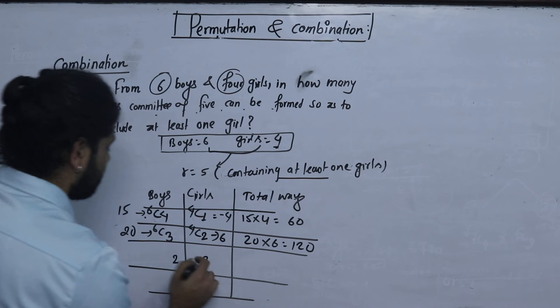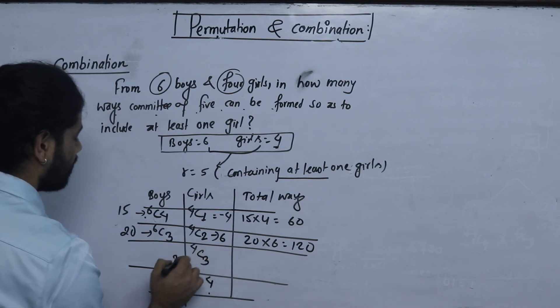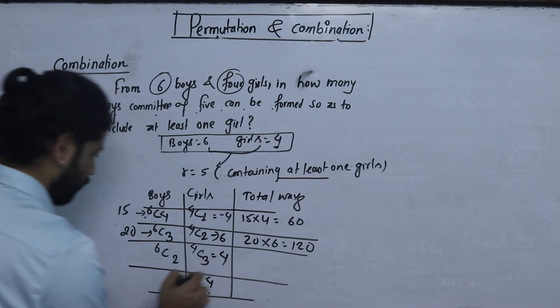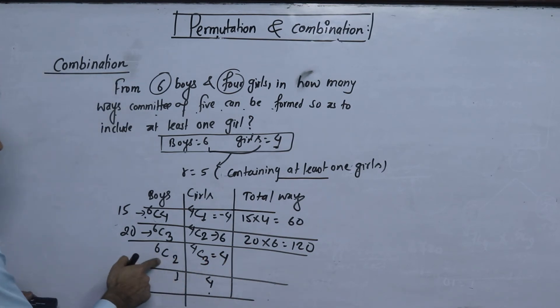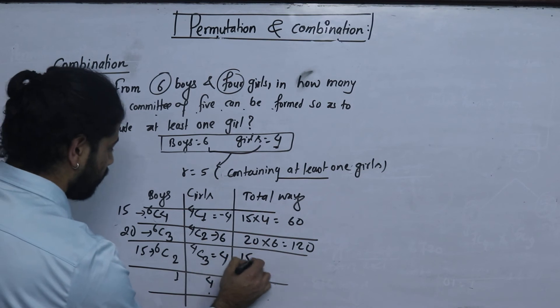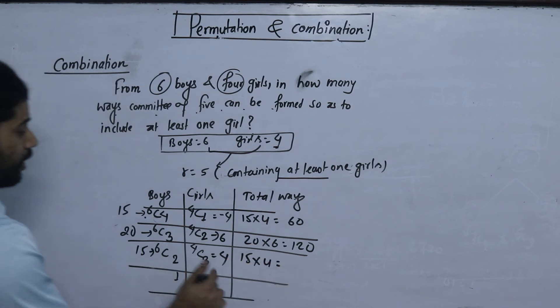If we have 3 girls, we have 4c3. 4c3 is 4. If we have 3 girls, we have 2 boys. And there are 6c2, we have 15. And there is 15 into 4, and this is 60.